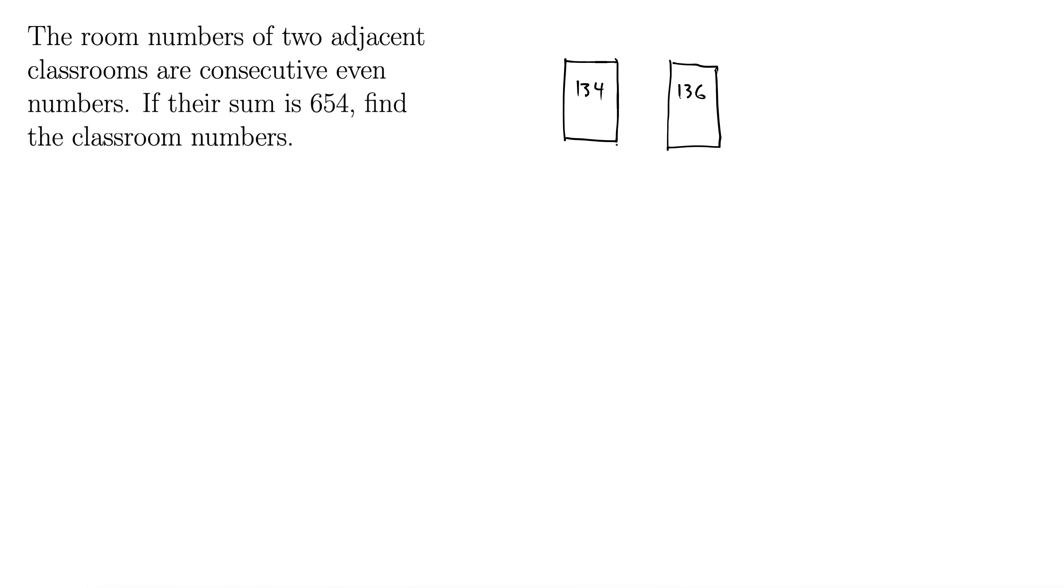We don't know what they are, though, but we do know that if we call the first one x, the next one has to be two more than it. No matter what the first one is, if they're consecutive even numbers, the next closest even number up is just two more.